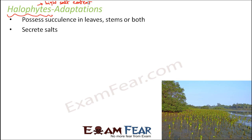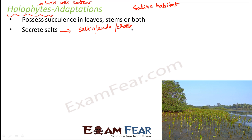Halophytes also secrete salts. Since they survive in saline habitats, too much salt content is not good for the plant's growth and survival. To deal with excess salts, they have specialized glands called salt glands, also known as chalk glands, whose purpose is to secrete excess salts from the plant. Certain plants also excrete salt through their epidermis, the outer layer of their skin.